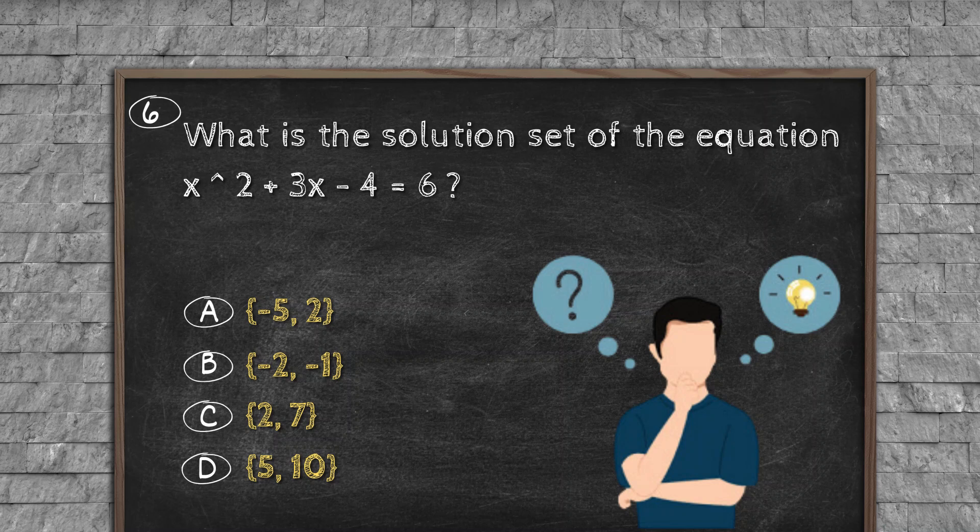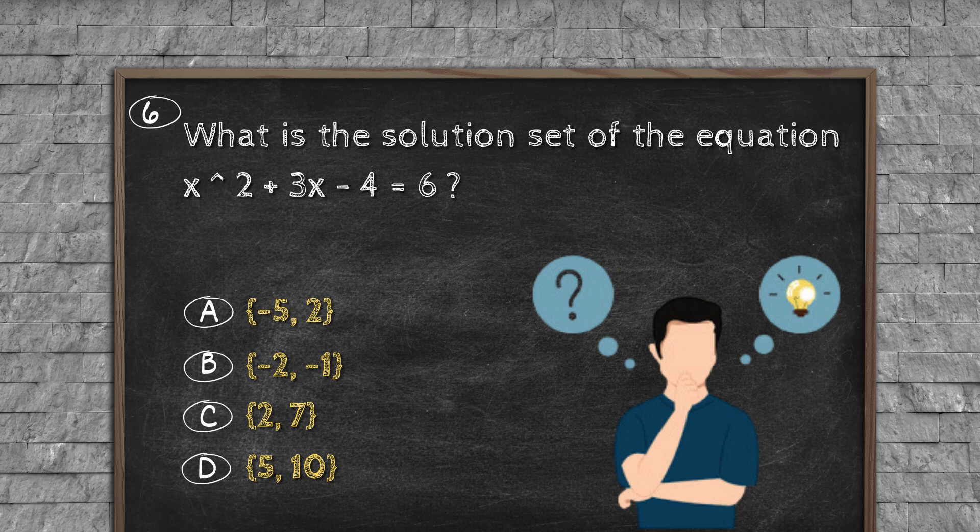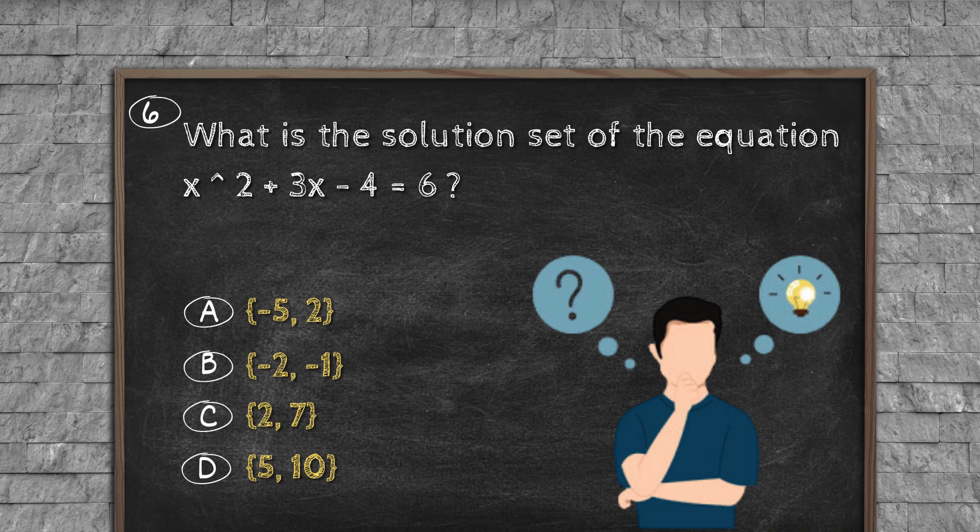Question number six: What is the solution set of the equation x² + 3x - 4 = 6? Option A: {-5, 2}. Option B: {2, -1}. Option C: {2, 7}. Option D: {5, -10}.